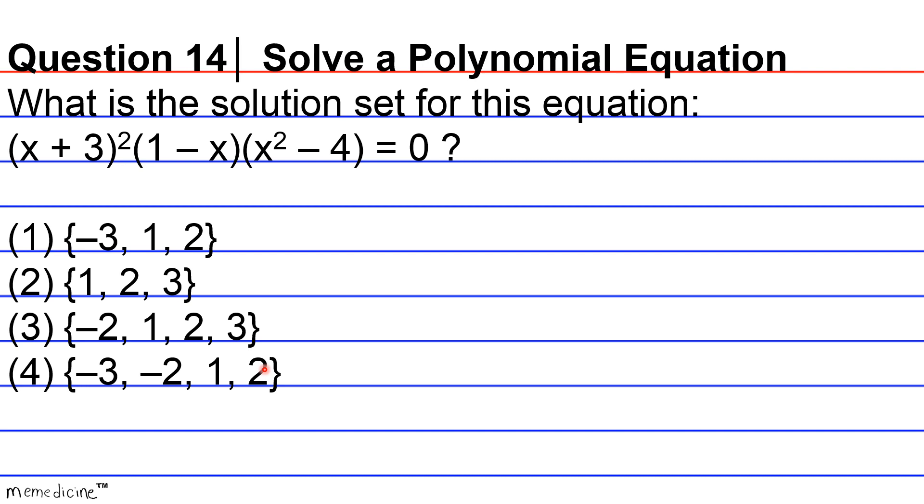Okay, so the first place that we're going to start conceptually is the zero product property. And the zero product property states that for all real numbers, we'll call one number A and we'll call number B. When A and B are factors that produce a product of zero, either A is equivalent to zero, B is equivalent to zero, or both A and B are equivalent to zero.